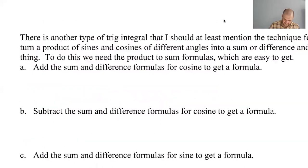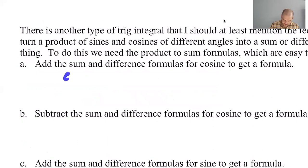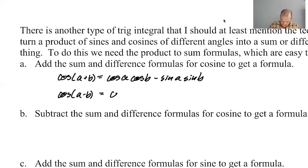So I need cosine of a plus b. Cosine of a plus b is cosine a cosine b minus sine a sine b. All right, we knew that. Cosine of a minus b is cosine a cosine b plus sine a sine b.